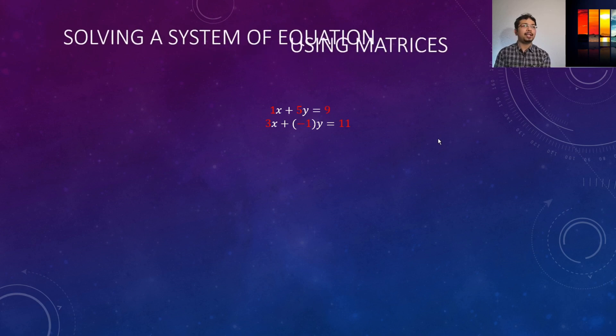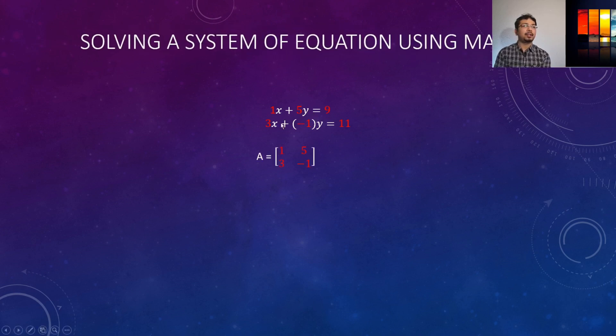Okay so we can write this thing as a matrix. I'll define a just a variable and then you can see the one here, five here, and then three and negative one. So we have written these coefficients in a matrix way. It's a two by two matrix. If we have three equations then it will be a three by three matrix and so on.